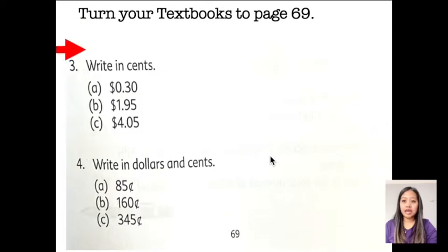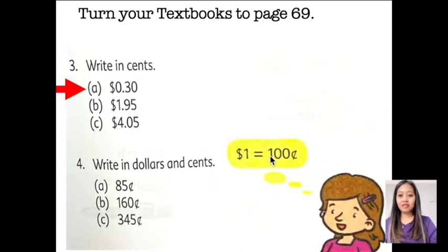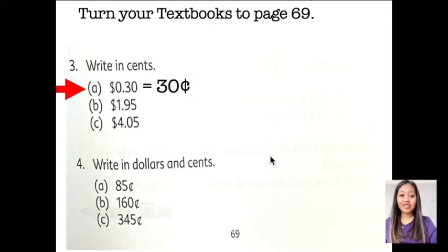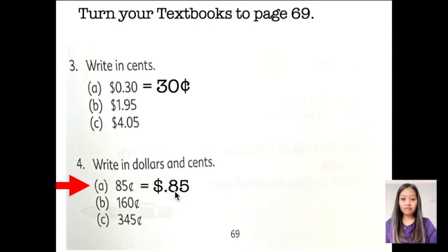Page 69 here. Let's write this in cents. Remember, 1 dollar is equal to 100 cents. The answer is 30 cents. And this one will do it the other way around. How do you write this in dollar and cents? 85 cents is equivalent to... Yes. You see, we have the dollar sign here, the decimal point there, and the number. I hope you can answer the other letters on your own.